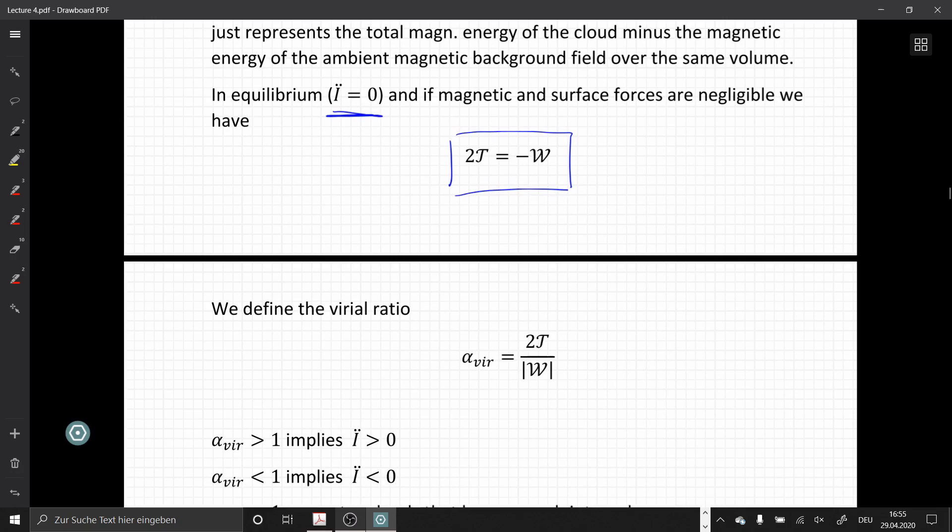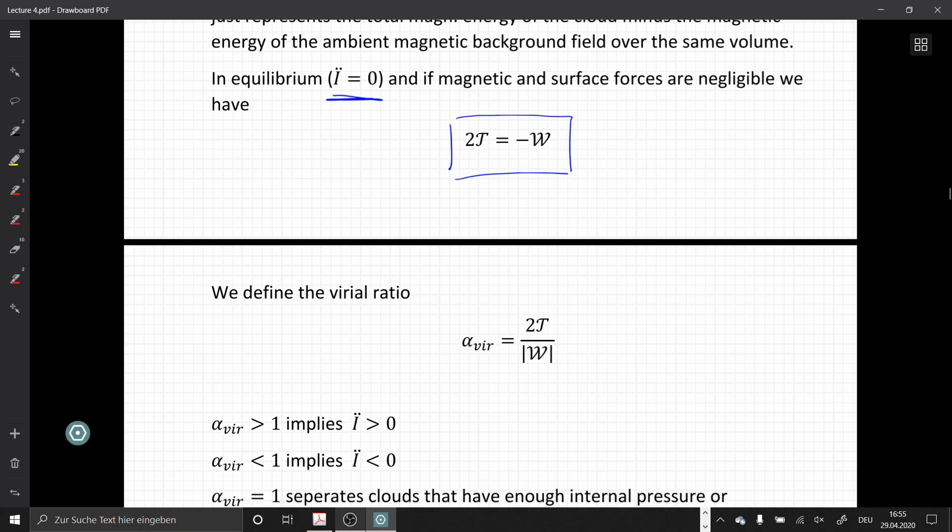We can now define the virial ratio, which is just the ratio of 2T over absolute value of W. And according to our equilibrium condition, this implies if this alpha is 1, then we have equilibrium. If alpha is larger than 1, then this means we have higher kinetic energy, which favors expansion. If it's smaller than 1, then we have higher potential energy, and there is not sufficient kinetic energy to expand our system.